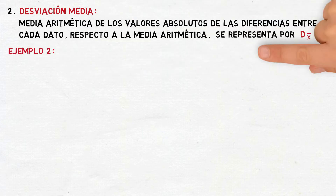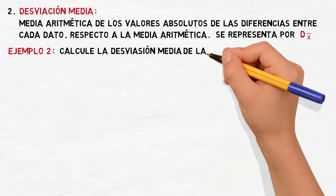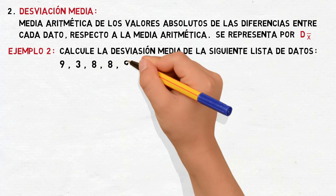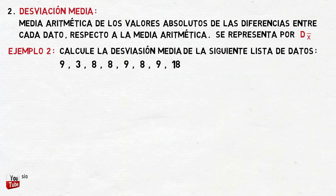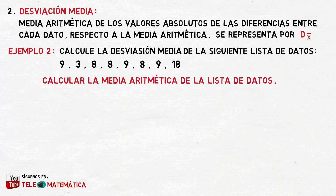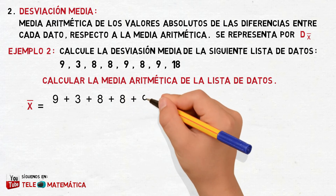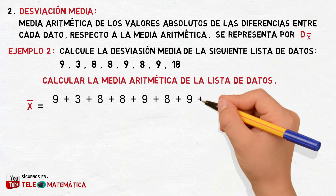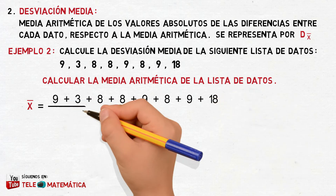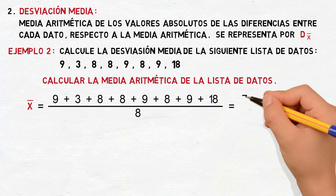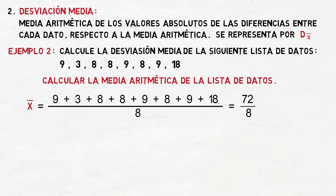Let's see an activity to better understand: calculate the mean deviation of the following list of data — 9, 3, 8, 8, 8, 9, 8, 9, and 18. First, we proceed to calculate the arithmetic mean, which equals 9 plus 3 plus 8 plus 8 plus 8 plus 9 plus 8 plus 9 plus 18, divided by the number of elements, which is 8. Solving: 72 divided by 8 simplifies to 9.